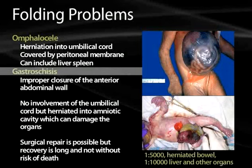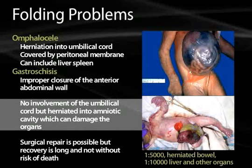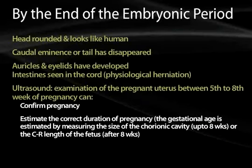A more serious defect is gastroschisis — remember that anything ending in '-schisis' indicates improper closure. In gastroschisis, there's failure of the anterior abdominal wall but no involvement of the umbilical cord, as the defect skirts past it on the right side. The organs actually herniate out into the amniotic cavity, and exposure to amniotic fluid often damages the organs. It is about as common as omphalocele; surgical repair is possible, but recovery is often longer with a very high mortality risk in serious cases.